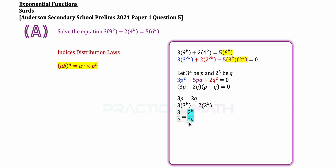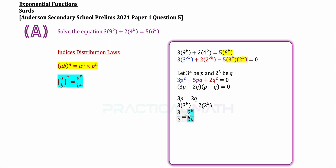As you can see, we have the same powers of k. We're going to use another form of the distribution law — instead of a product, we now have a division. So a to the power of n divided by b to the power of n can be written as a over b, the whole thing to the power of n. Applying this law from right to left, we can change the right-hand side into 2 over 3, the whole thing to the power of k.